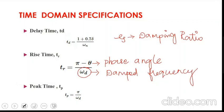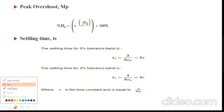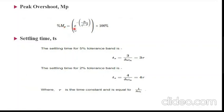Peak time Tp = π / ωd. For peak overshoot, the percentage of peak overshoot is expressed as: %Mp = e^(−ψπ / √(1 − ψ²)) × 100%. Peak overshoot should always be expressed in percentage.